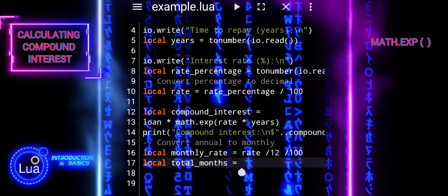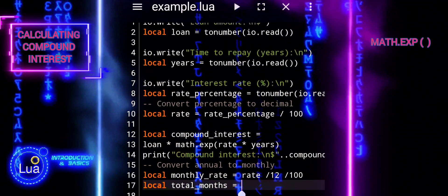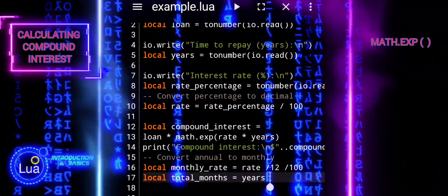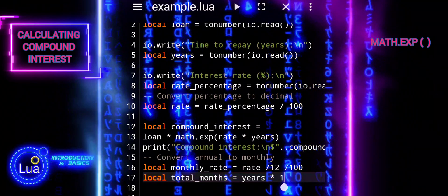Here we will compute the total number of months by multiplying the duration to repay the loan in years by 12, converting it from years to months.